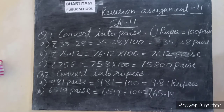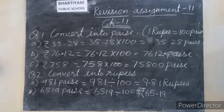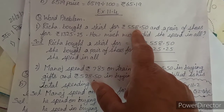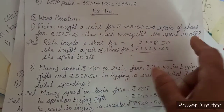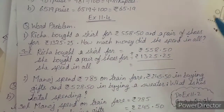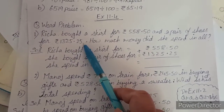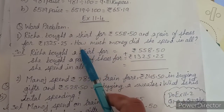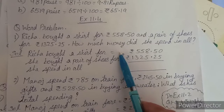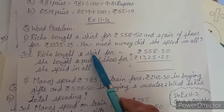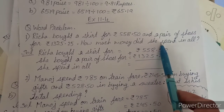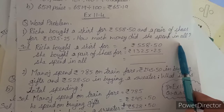Now some word problems that are very important. Word problem on money: Richa bought a skirt for rupees 558.50 and a pair of shoes for rupees 1325.25. How much money did she spend in all? We will add both amounts.